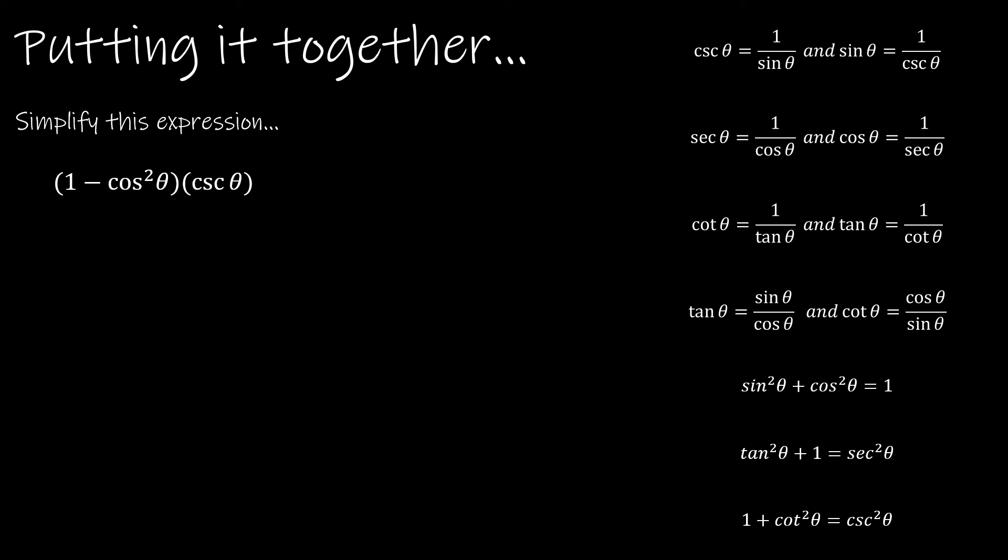Well, the first thing I'm going to do is look at this relationship. Sine squared theta plus cosine squared theta is equal to 1, which means by some algebraic manipulation, I can say that sine squared theta is equal to 1 minus cosine squared theta. So I'm going to replace my first expression with sine squared theta.